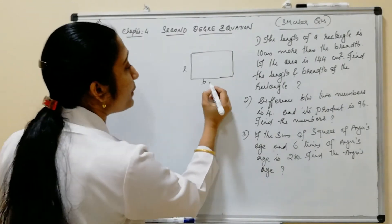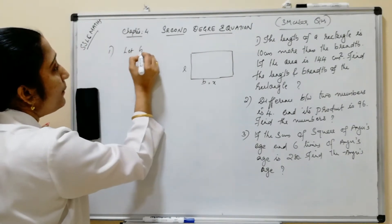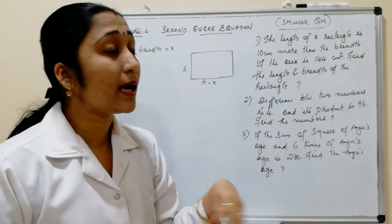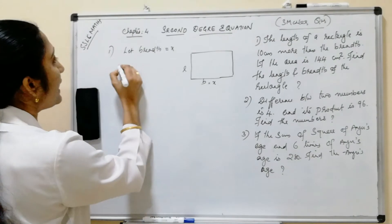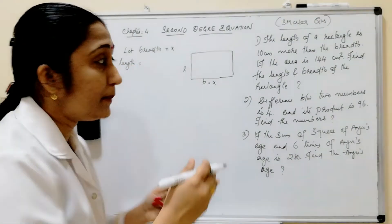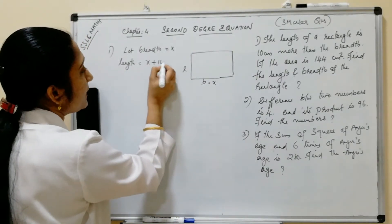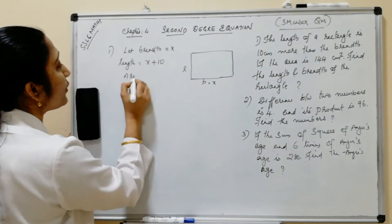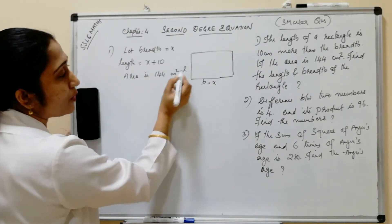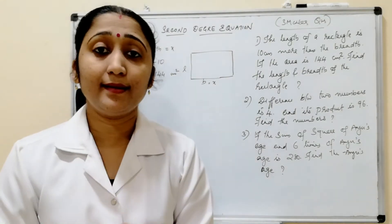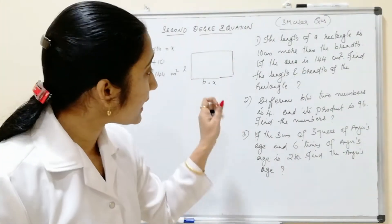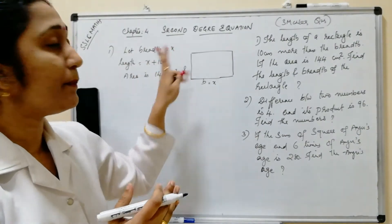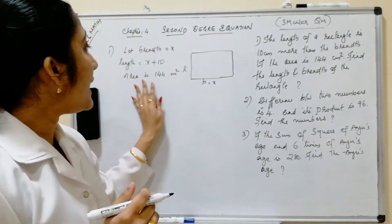We take breadth as x, so breadth = x. The length is 10 more than the breadth, so length = x + 10. The area is given as 144 cm². We have to find the length and breadth.